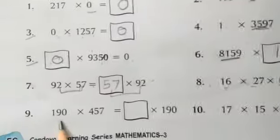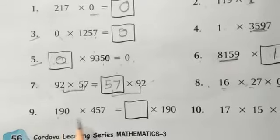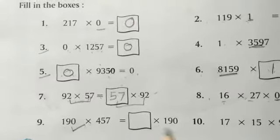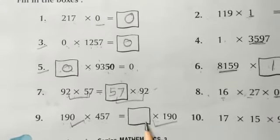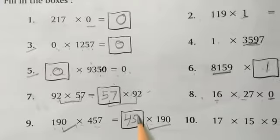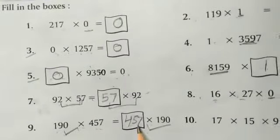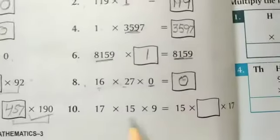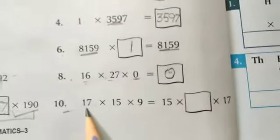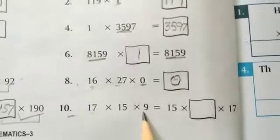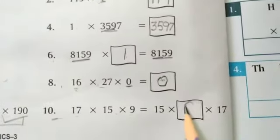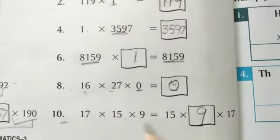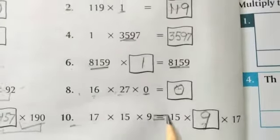Ninth question: 190 × 457 equals 457 × 190 — the missing digit is 457 because both sides are equal. Tenth question: 15 × 9 — which number is missing? The answer is 9, and 17 × 15 × 9 — what are both equal to?